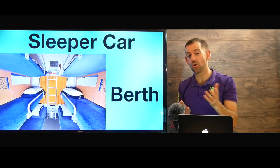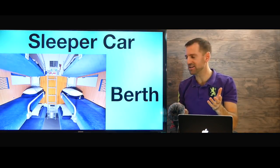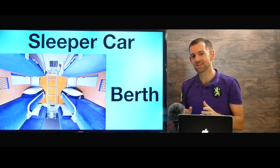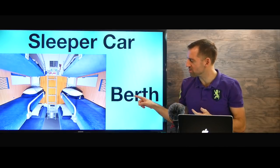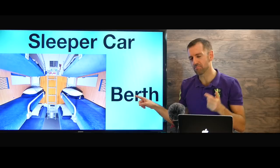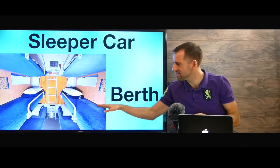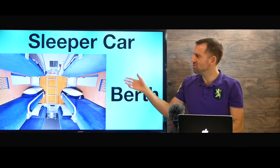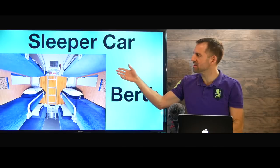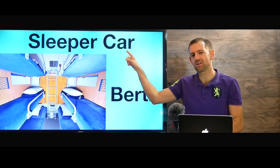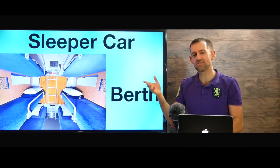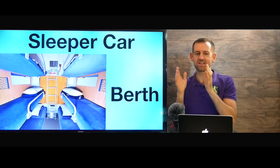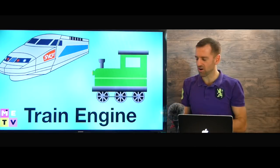If you're taking an overnight train, then you probably won't have a seat — you're going to have a berth. These beds are called berths, and you'd probably be in a sleeper car. A train might have several different cars: a sleeper car, a sitter car, and a dining car.